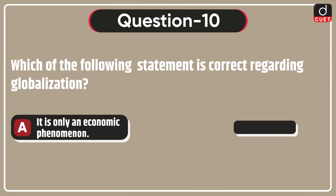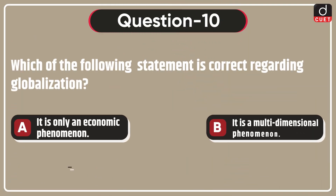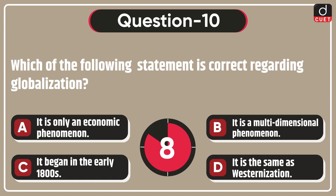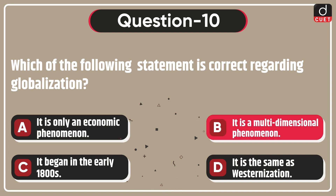Last question is, which of the following is correct regarding globalization? It is only an economic phenomenon, it is a multi-dimensional phenomenon, it began in the early 1800s, or it is the same as westernization? The correct answer is option B, it is a multi-dimensional phenomenon.